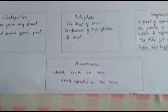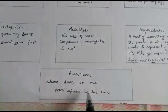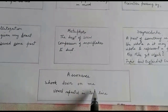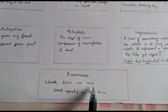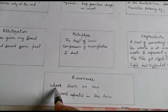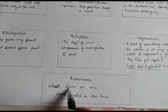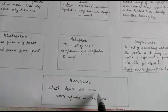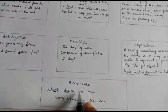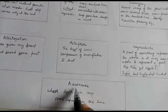We come to the last one, that is assonance. What do you mean by assonance? When any vowel is repeated in the sentence — in the entire line there is a repetition of a vowel — that is assonance. For example, 'shook down on me': shook has double-O, down again has O, and on has O. So can you see this repetition of O in the sentence? This is called assonance — the vowel repeated in the line.